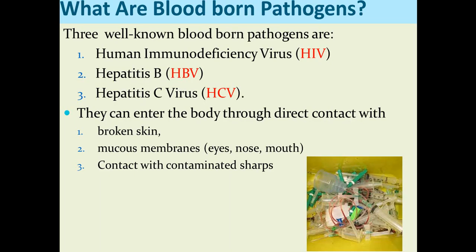What are the blood-borne pathogens? Which pathogen is transmitted through the blood? There are three well-known blood-borne pathogens: first, the human immunodeficiency virus, HIV, which is responsible for AIDS; and hepatitis B virus and hepatitis C virus. These are the three main blood-borne pathogens.